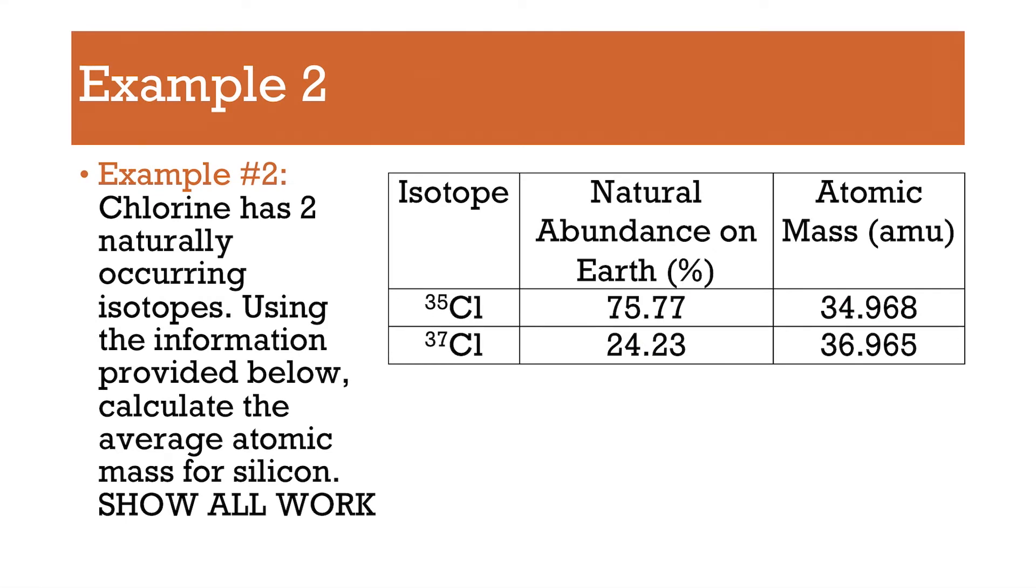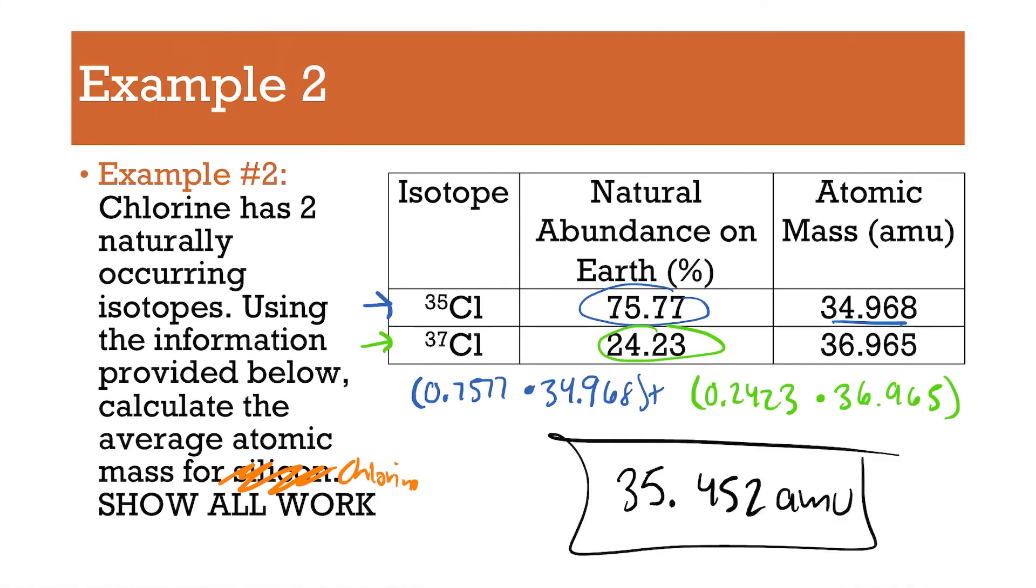Try this one. Example two. Chlorine has two naturally occurring isotopes. Using information provided, calculate the average atomic mass for chlorine. So, what you should have done, convert this to a decimal. So, you get 0.7577 times the mass, 34.968. And I'm going to add that to this. So, you get this as a decimal of 0.2423 times 36.965. There's your setup. No need to divide by 100. Plug it into a calculator. And you get 35.452. And there's your answer.